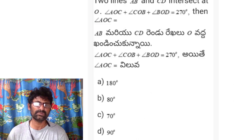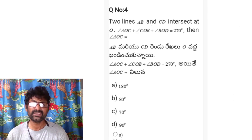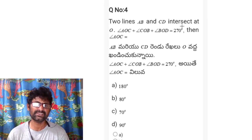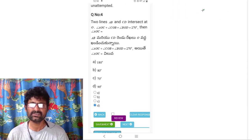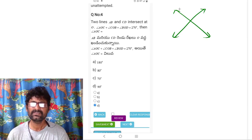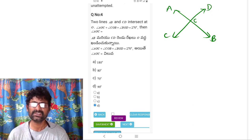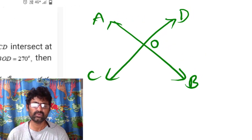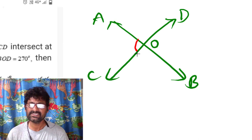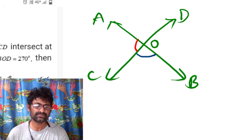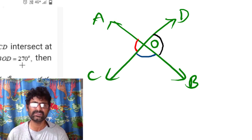Question 4: two lines AB and CD intersect at O. We need to find angle AOC, given that angle AOC + angle COB + angle BOD = 270°. Let angle AOC = X and angle BOC = Y. Since AOC and BOD are vertically opposite angles, angle BOD = X as well.